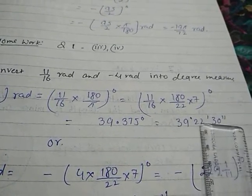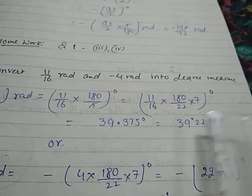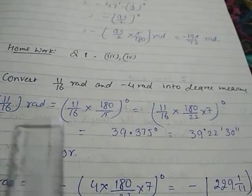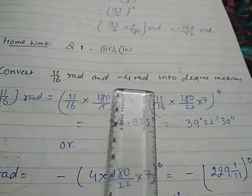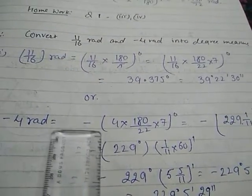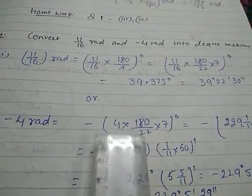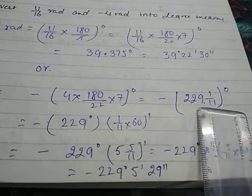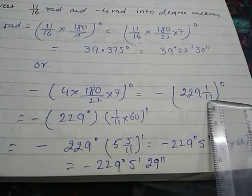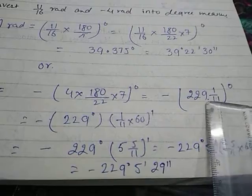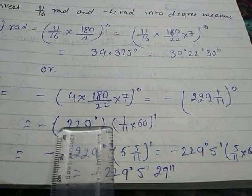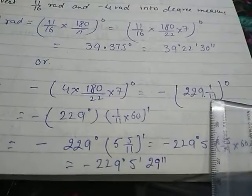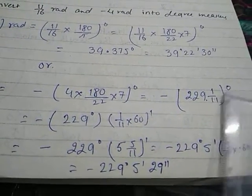The 0.375 degrees can be converted into minutes, giving 22 minutes and 30 seconds. So that is the complete conversion for 11/16 radians. For the second part, −4 radians — the minus indicates clockwise direction. Calculation: 4 × 180/π, with π = 22/7, gives 229 and 1/11 as a mixed fraction. The whole number part 229 is the degrees, and the fractional part 1/11 is converted to minutes.